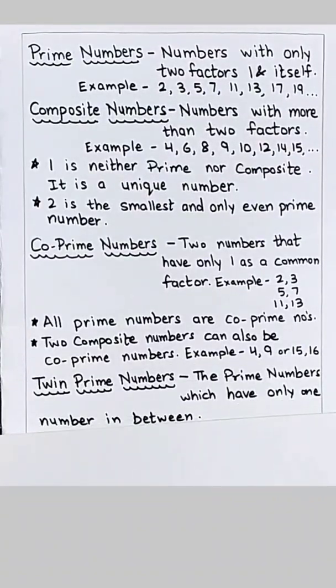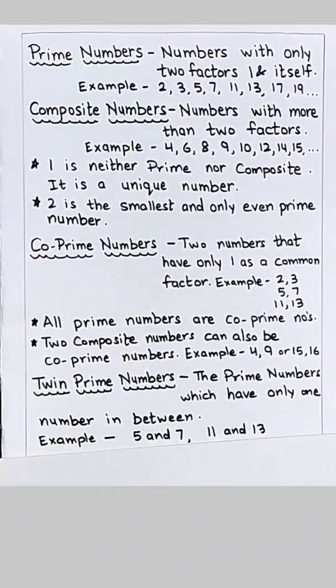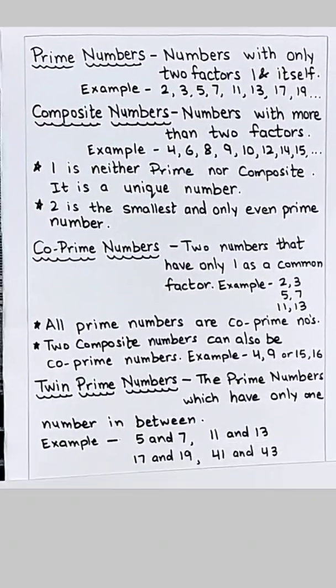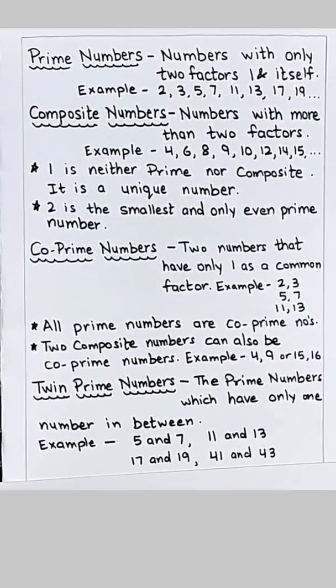The prime numbers which have only one number in between. For example 5 and 7, 11 and 13, 17 and 19, 41 and 43.